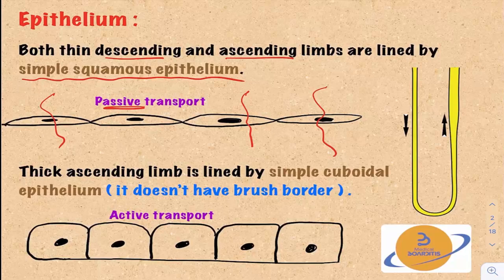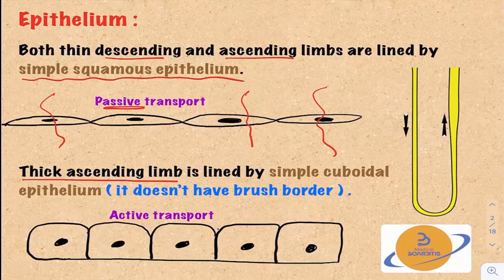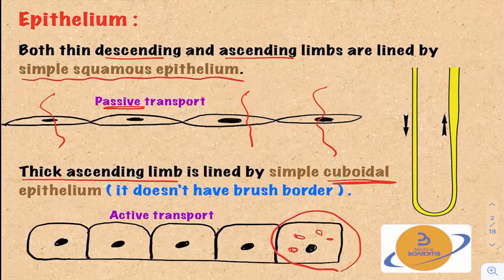This is in contrast to the thick ascending limb, which performs a lot of the active transport in the Loop of Henle. That's why the cells here are simple cuboidal cells — they are bigger and contain many organelles dedicated to active transport.